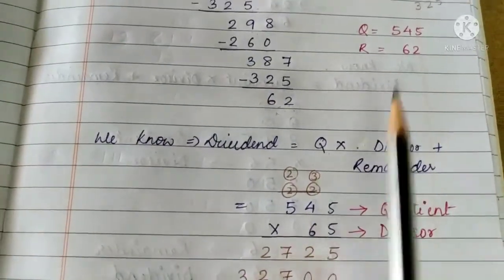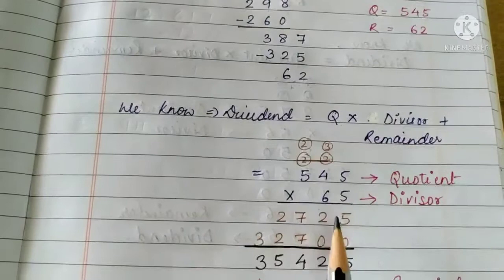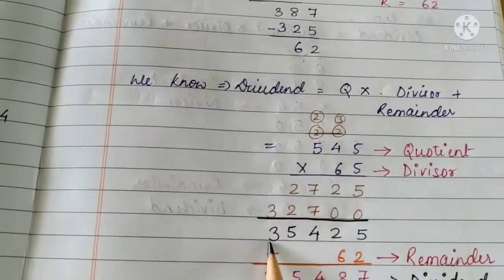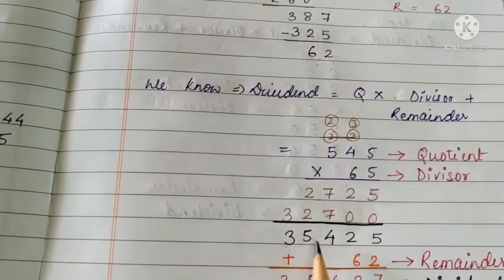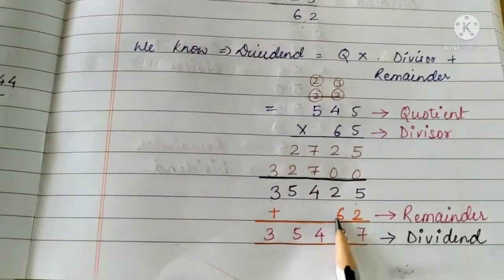So, quotient is 545 multiplied by our divisor which is 65. So, after this multiplication, we have got this answer: 35,425. Now, we add the remainder, 62.